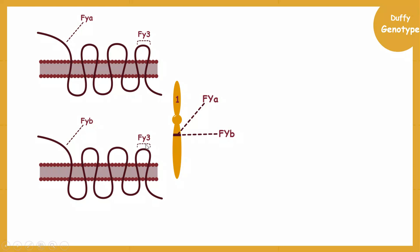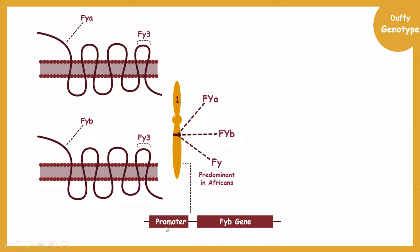Let's explain the null phenotype. In some individuals, a recessive Duffy gene is present, represented simply as FY. This mutated gene is mainly expressed in the African population. The coding portion of the gene remains normal, but the promoter region is mutated — specifically, the GATA sequence in the promoter region is mutated. So transcription factors cannot attach to the promoter region, stopping expression of the FY gene. Importantly, this is a mutated form of the FYB allele, so FYB allele is mutated in Africans, making them unable to produce Duffy glycoprotein on red blood cells.